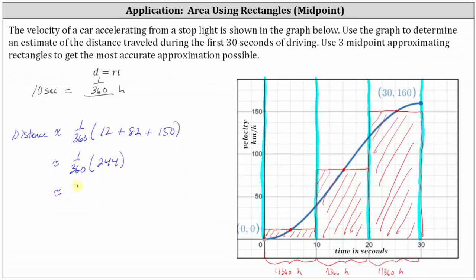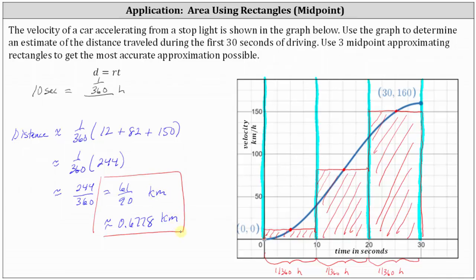Multiplying, we have 244 divided by 360, which simplifies to 61 over 90. As a decimal approximation, this is 0.6778. Because the velocity is in kilometers per hour and the time is in hours, this distance is in kilometers. So the estimate for the distance traveled during the first 30 seconds is 61/90 of a kilometer, or approximately 0.6778 kilometers.